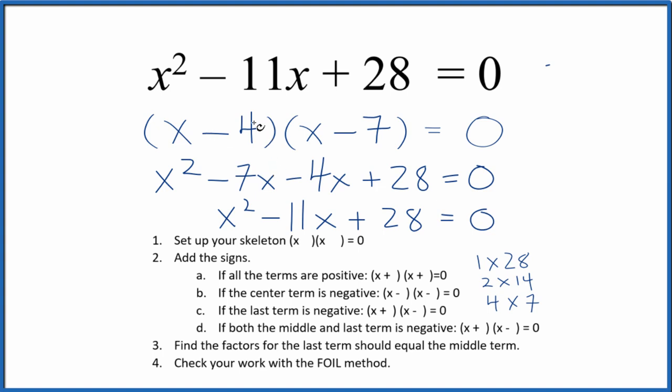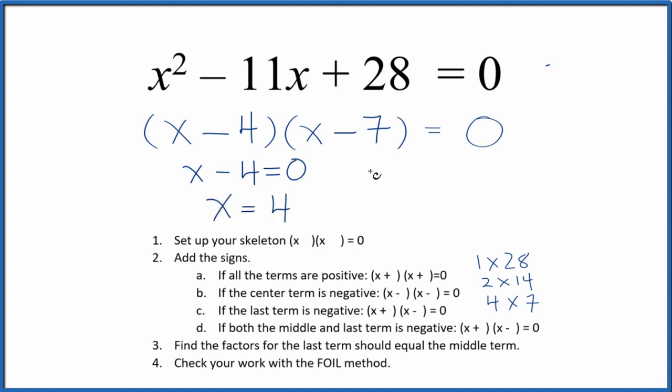Let's find the values for x that when we put them in the equation here, it'll make this whole side zero. Zero equals zero. That's a true statement. So we could say x minus 4 equals zero. x would equal 4. x minus 7 equals zero. x equals 7.